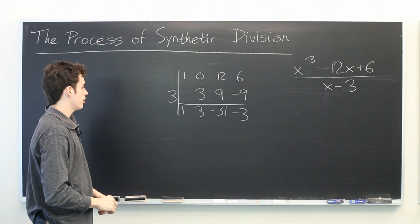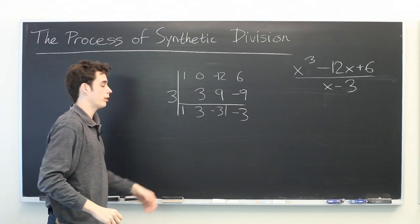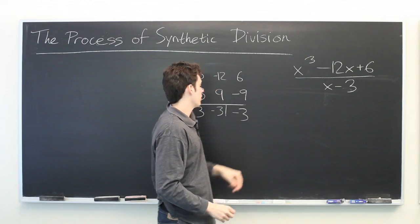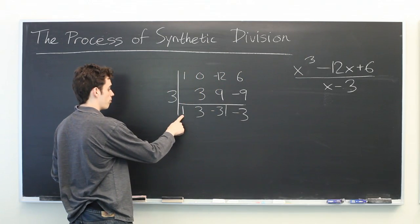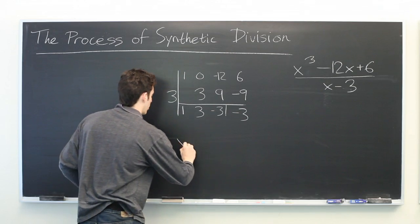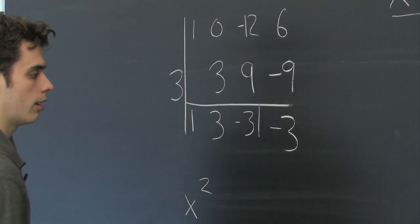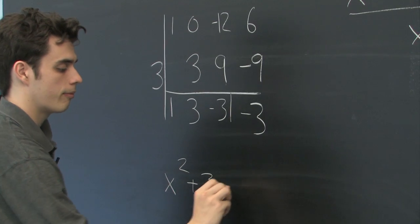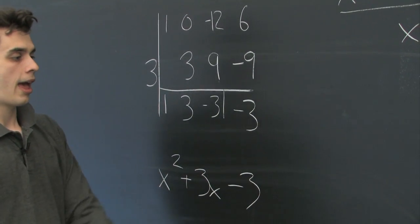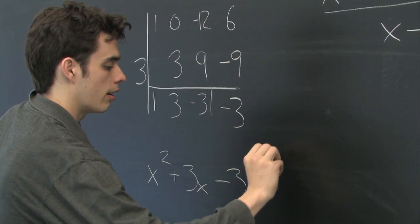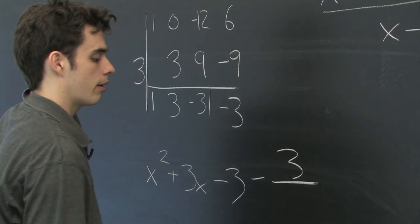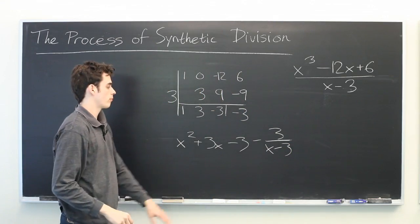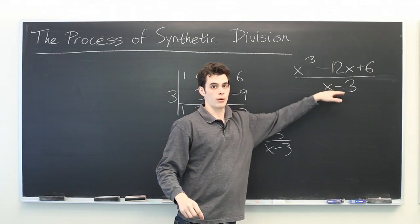So from here the way that we interpret this result is we subtract 1 from our leading power, and this will be the coefficient of x squared plus 3x minus 3. And then this we'll write as minus 3 over x minus 3, which is the same as the denominator that we started with.